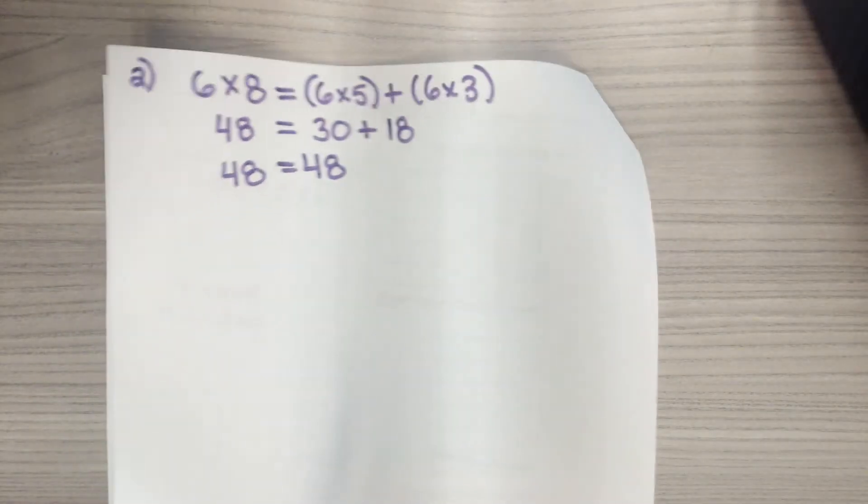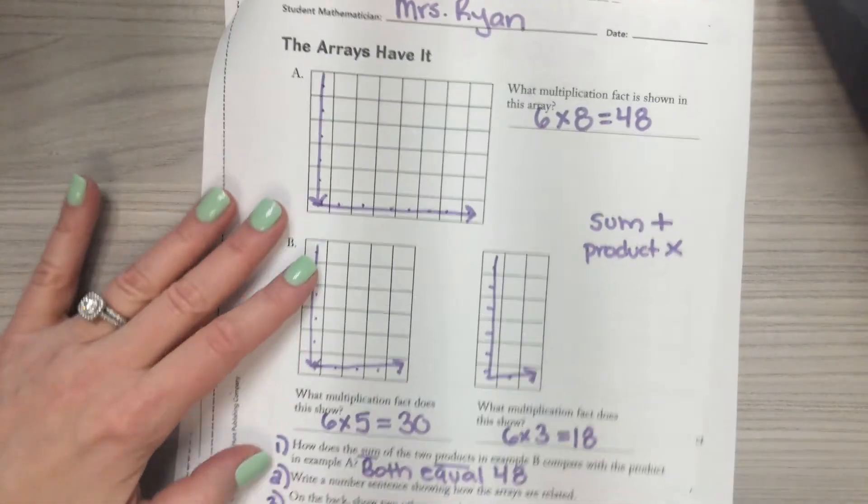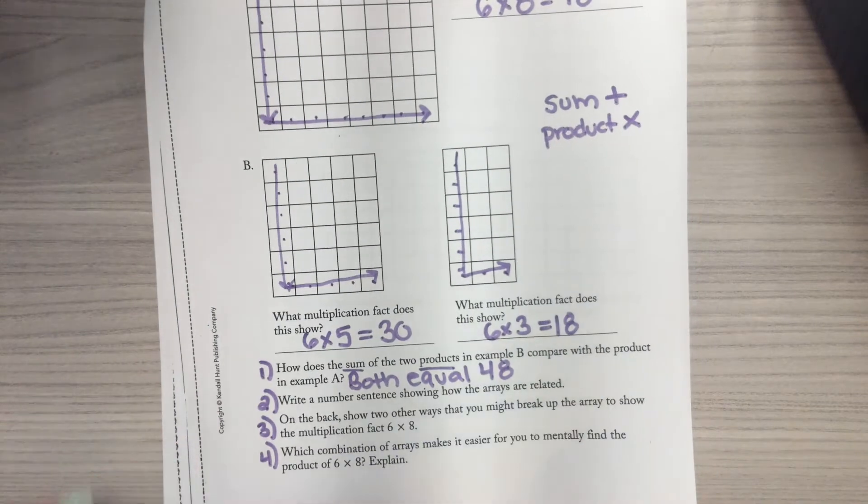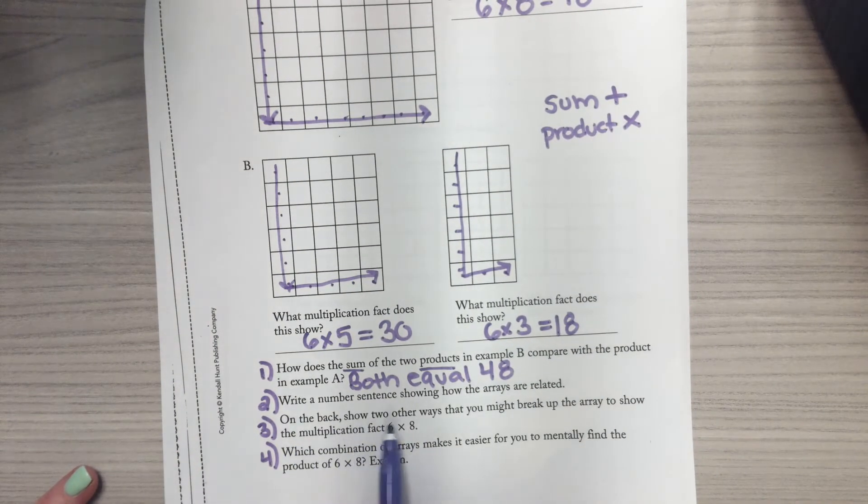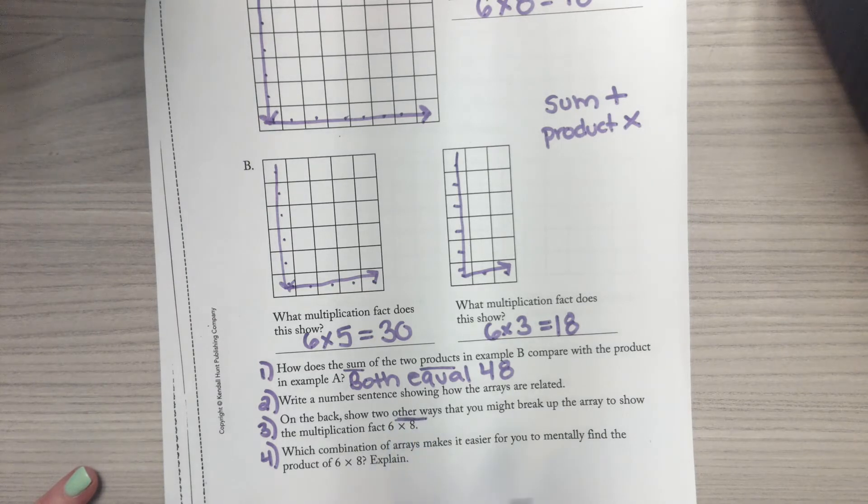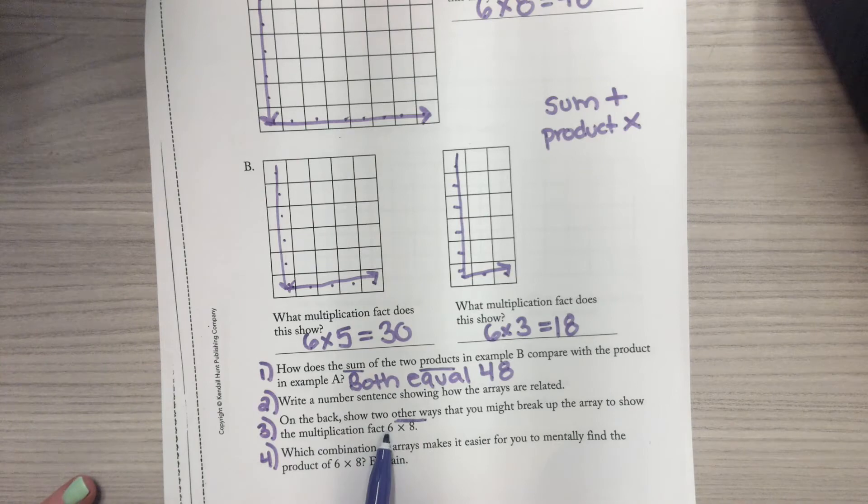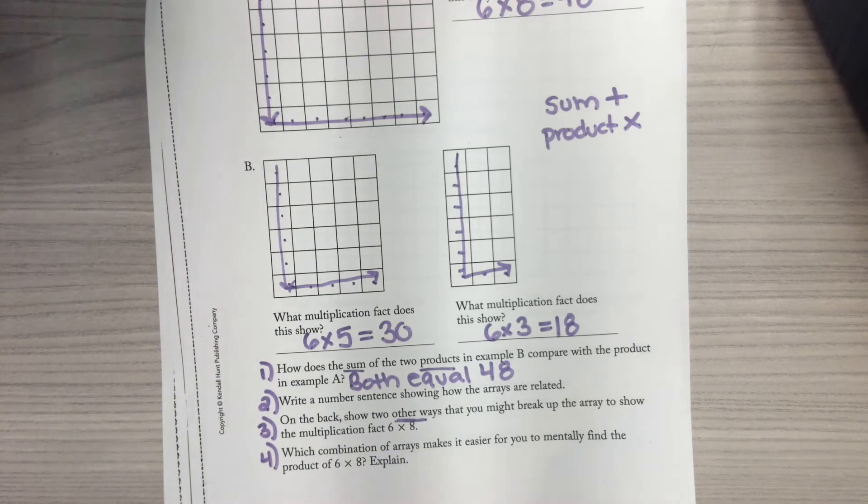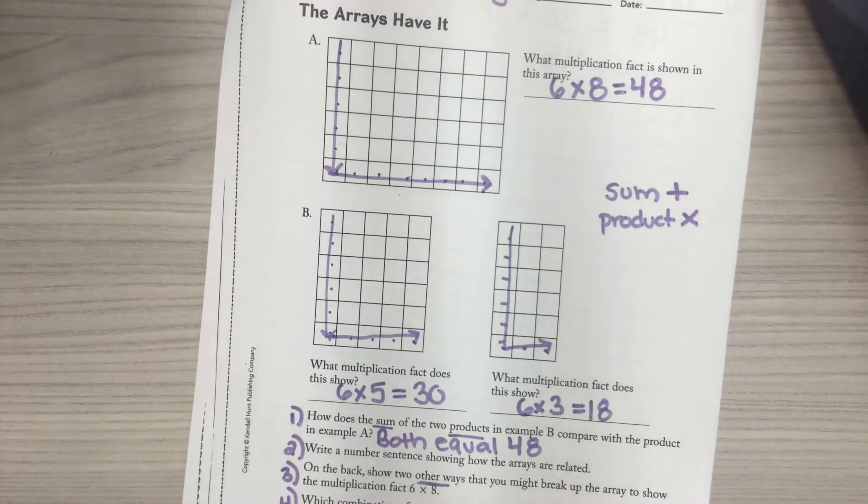So I got this six by eight by looking at the first array. I have this six times five and the six times three. I got that from the bottom two arrays. If you need to pause the video, of course, you just go ahead and do that. I'm going to go ahead and look at three. So when you're ready, you can start number three with me.